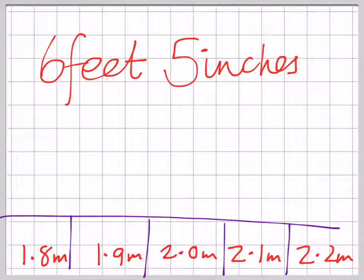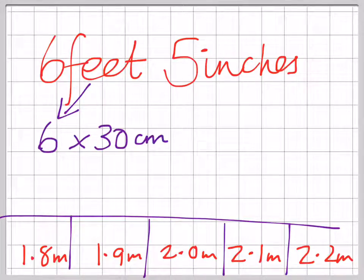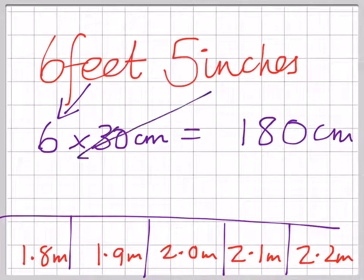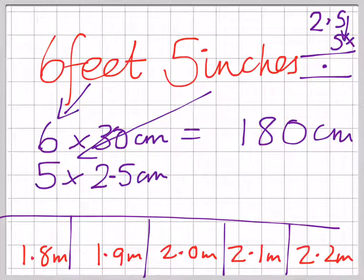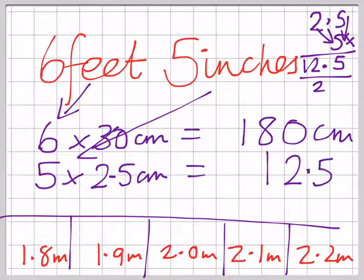Let's start by working out what 6 feet would be in centimeters. 6 feet would be 6 lots of 30 centimeters because a foot is 30 centimeters. That would give us 180 centimeters. Now for the slightly harder bit. Let's do 5 inches. That would be 5 lots of 2.5 centimeters. If we do that as a little sum up in the corner, 2.5 times 5. 5 times 5 is 25 and then 2 times 5 is 10 and 2 is 12. So we've got 12.5 centimeters.